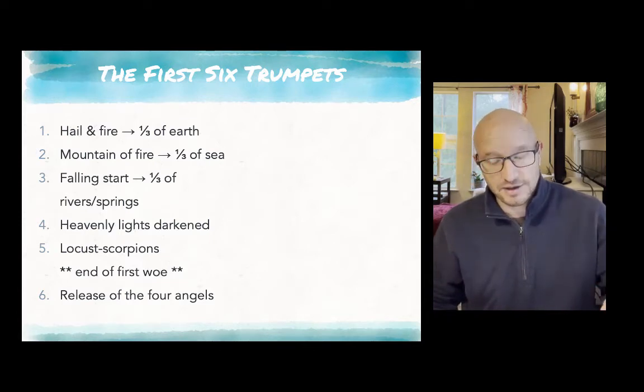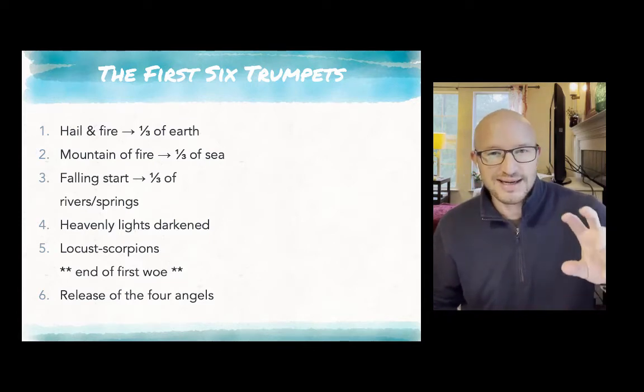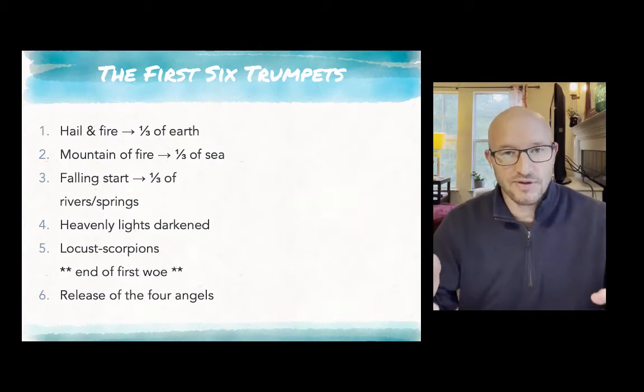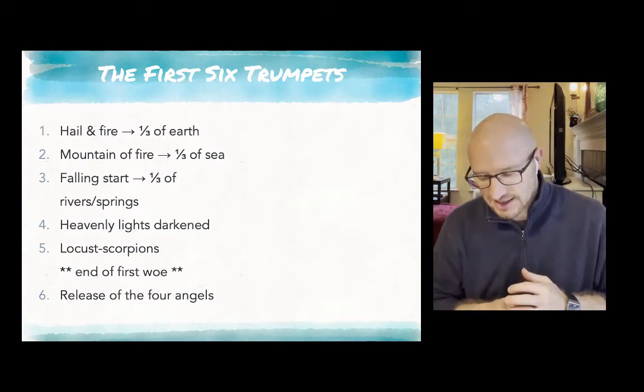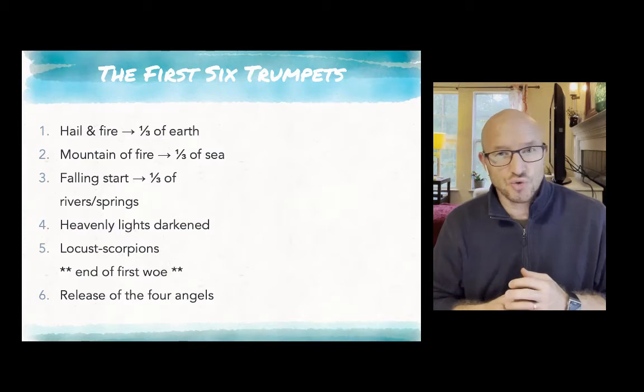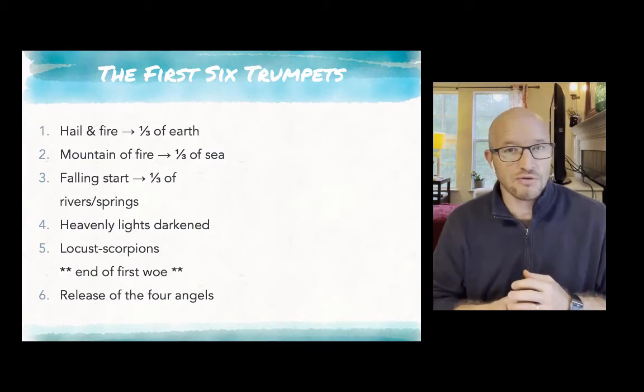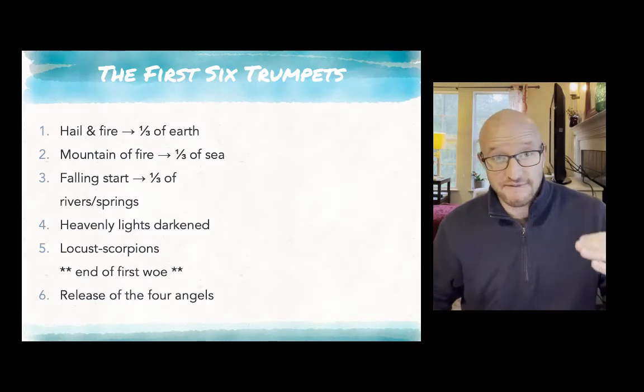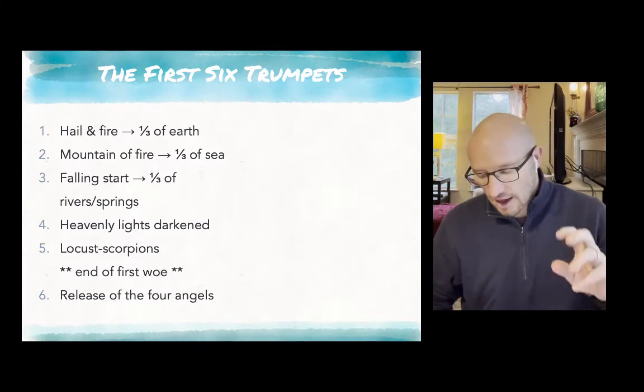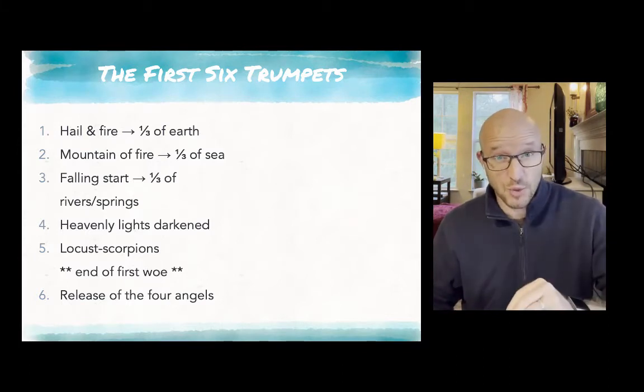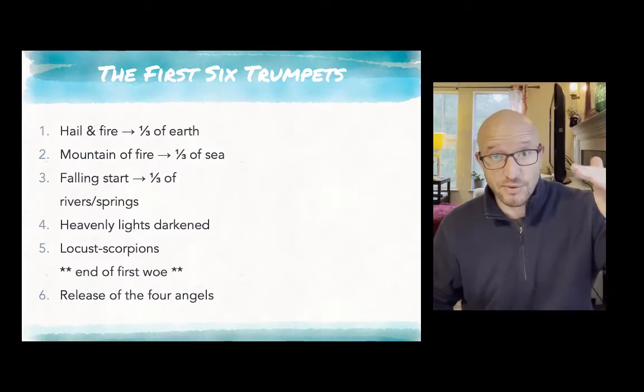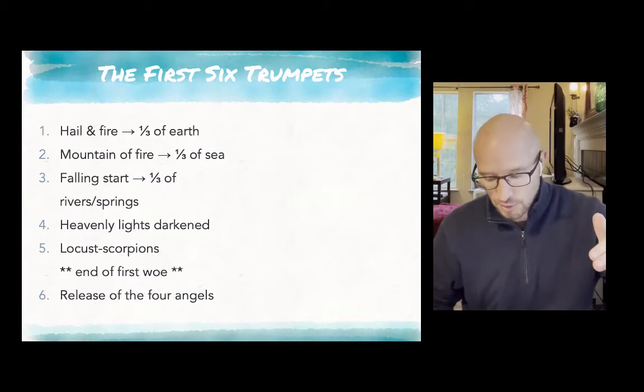Then the second trumpet blasts, and this time the catastrophe is a mountain of fire that topples into the ocean and it's said to destroy and make unusable a third of the ocean. The next is a falling star that attacks or affects rivers and springs, fresh water. So we have earth, we have salt water, we have fresh water, all being affected.